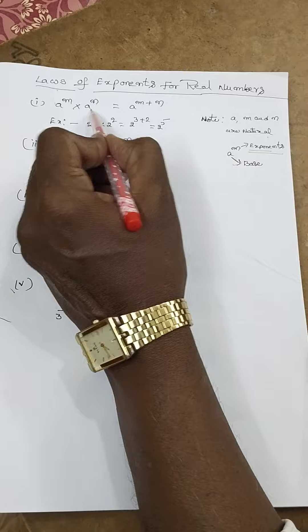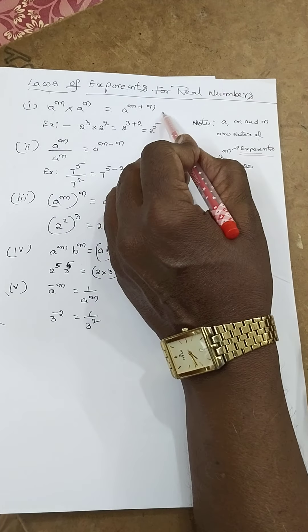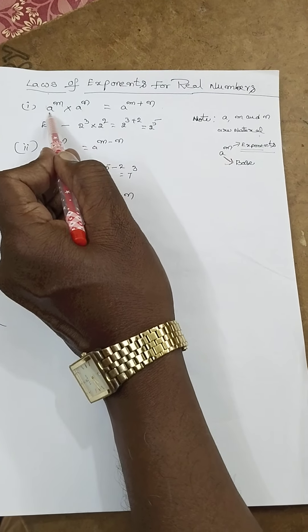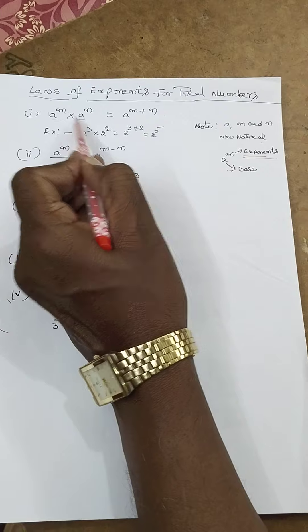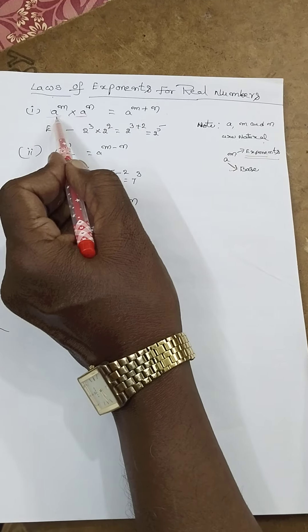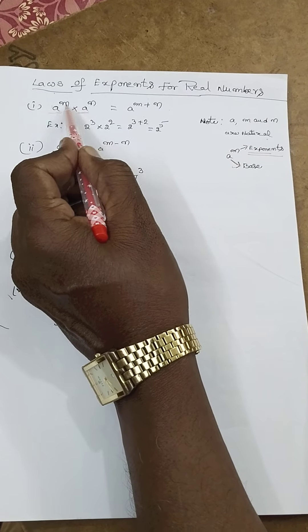So here a^m × a^n = a^(m+n). Because the bases are equal, powers will be added. When bases are equal, powers are added.